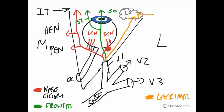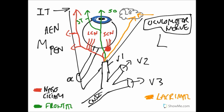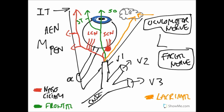The cranial nerve that influences the nasociliary nerve in terms of pupillary constriction and accommodation is the oculomotor nerve. The parasympathetic fibers traveling with the lacrimal nerve to the lacrimal gland are associated with the facial nerve — so we associate the facial nerve as providing parasympathetic fibers traveling to the lacrimal gland.